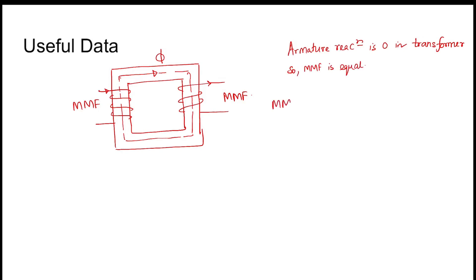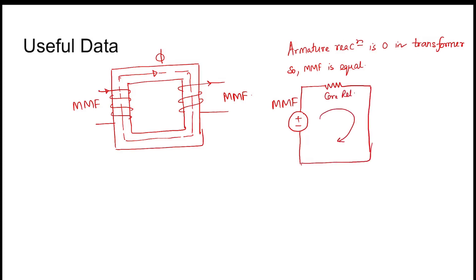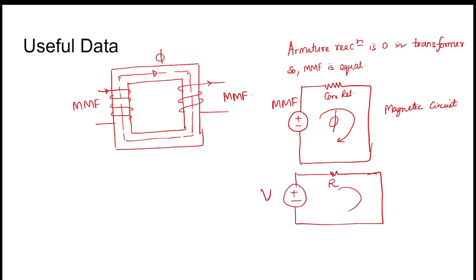MMF is like voltage in an electrical circuit. This is a magnetic circuit where MMF is present, core reluctance is present, and phi is circulating. You can build an analogy: MMF is analogous to voltage, reluctance is analogous to resistance, and flux phi is analogous to current.